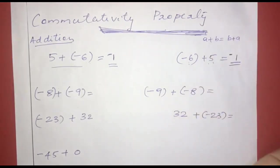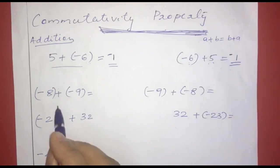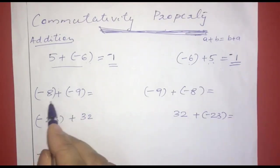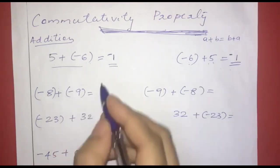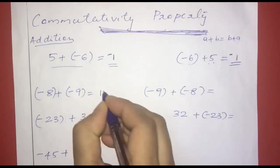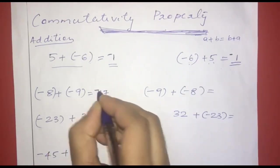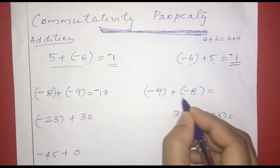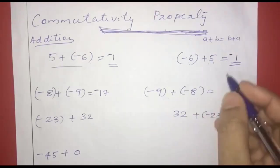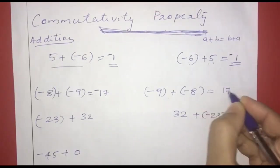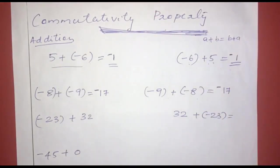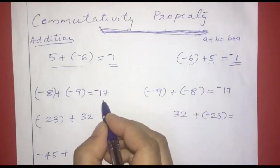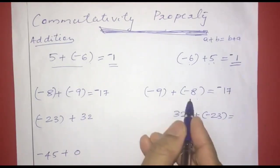If we add in any order, we get the same answer. Another example: negative 8 plus negative 9. Same sign, so 9 plus 8 is 17, and negative 17. Reversing order: negative 9 plus negative 8 gives 9 plus 8 equals 17, still negative 17. So a plus b equals b plus a.